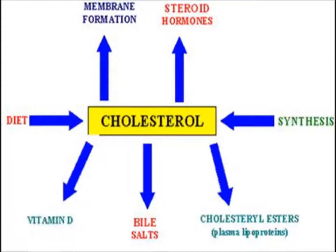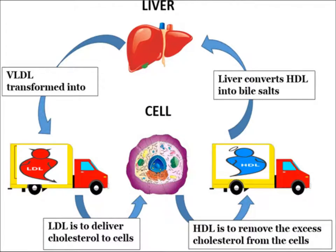Vitamin D and bile salts are formed from cholesterol, and cholesterol esters are synthesized in the liver to make plasma lipoproteins. Cholesterol is of two types — bad and good. The bad LDL cholesterol is transported from the liver to the cell and accumulated there. High density lipoprotein (HDL) is the good cholesterol which transports cholesterol from the cells back to the liver.